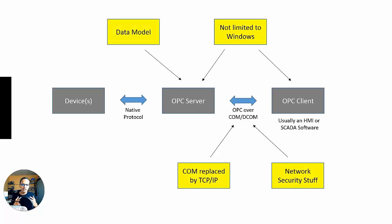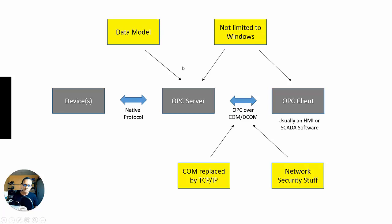Then there's the data model. In OPC UA they call it an information model. Walker Reynolds of 4.0 Solutions — if you're not subscribed to 4.0 Solutions, you are missing out. He refers to it as a data model and I agree with him. Having a programming background, the big deal they make about the data model in OPC UA — programming has been doing it for years with JSON and data structures. There are protocols that do this as well: BACnet, IEC 61850. But OPC UA is doing it differently, so what does this data model mean for practical real-world implementations?